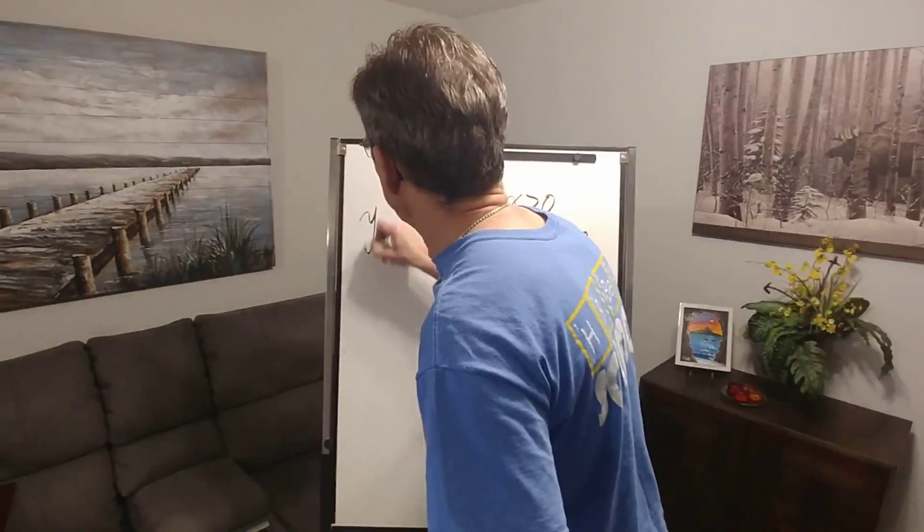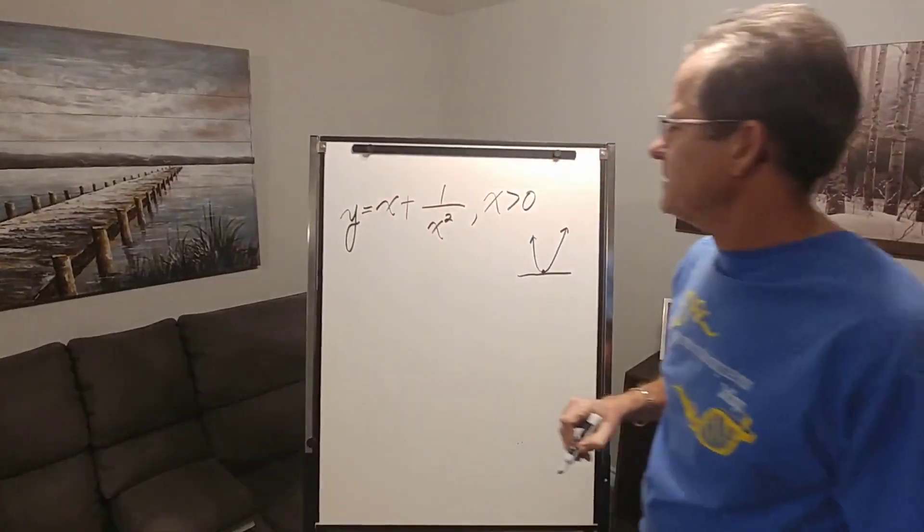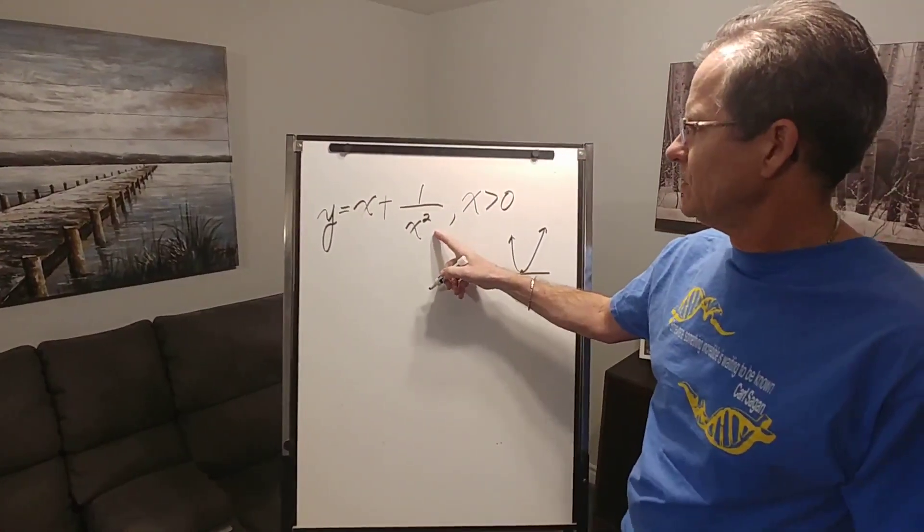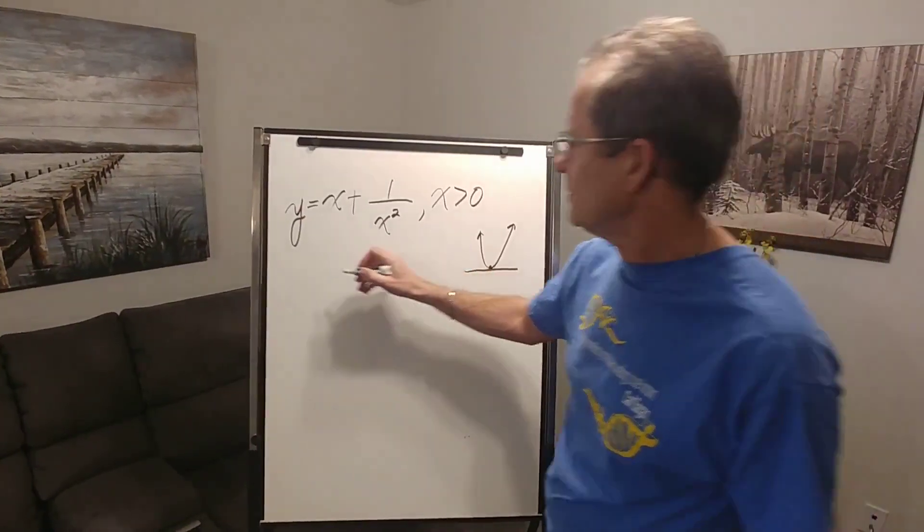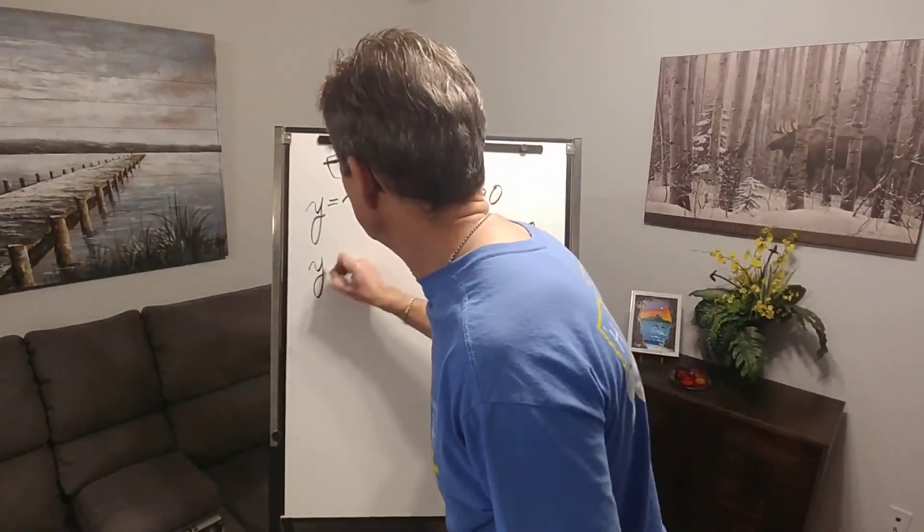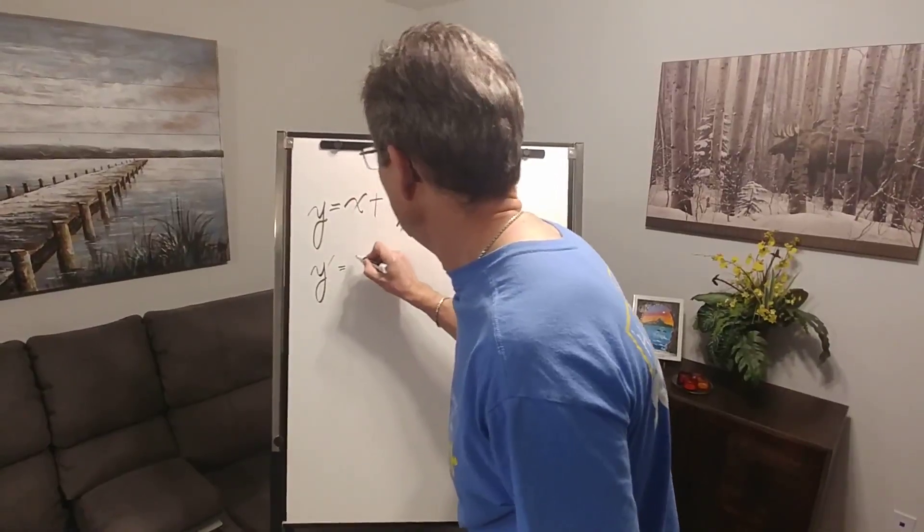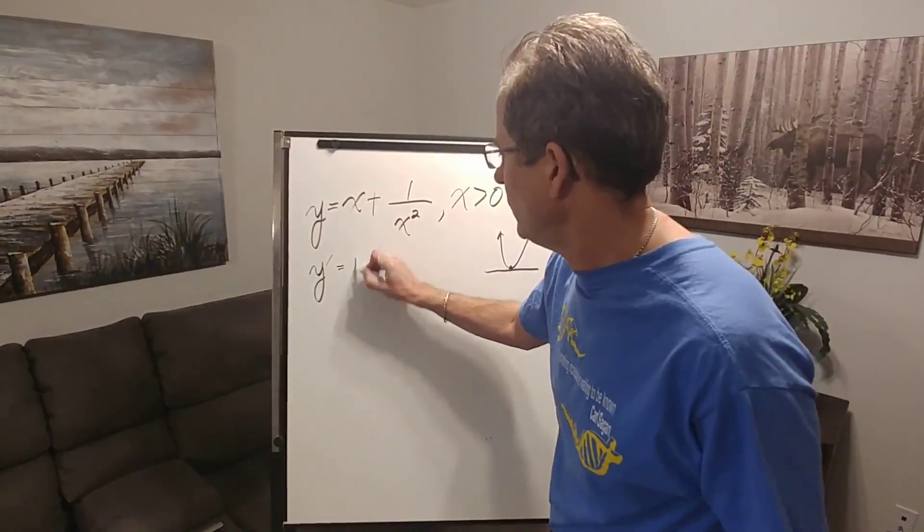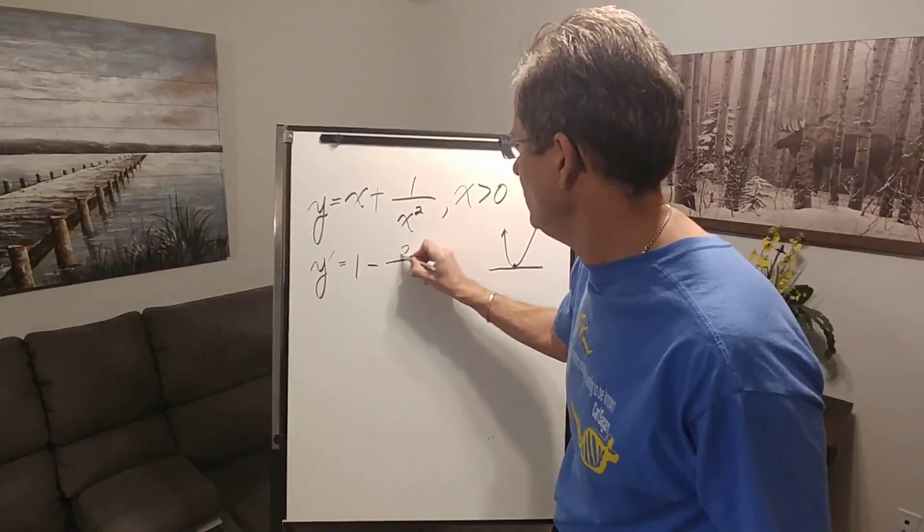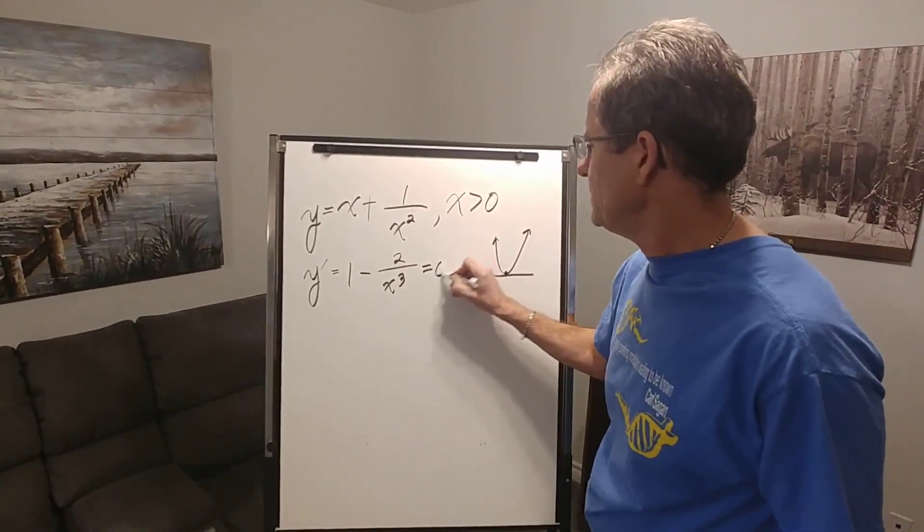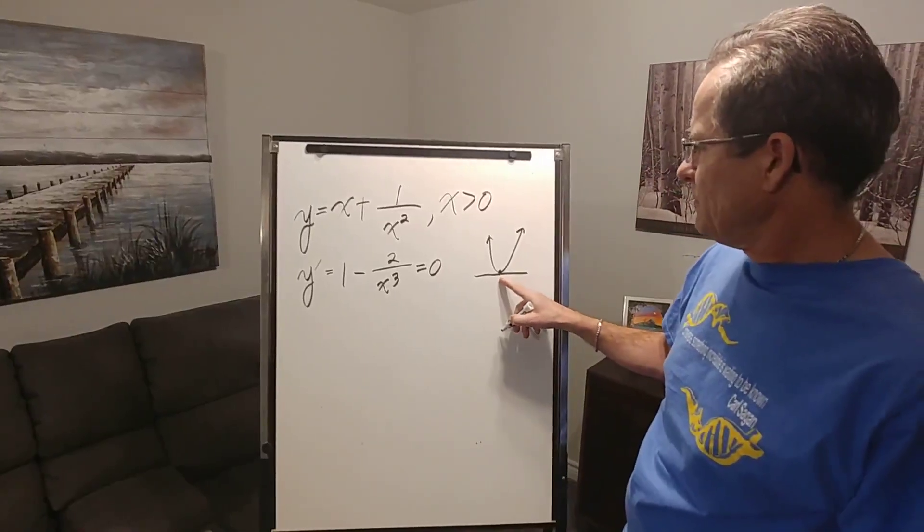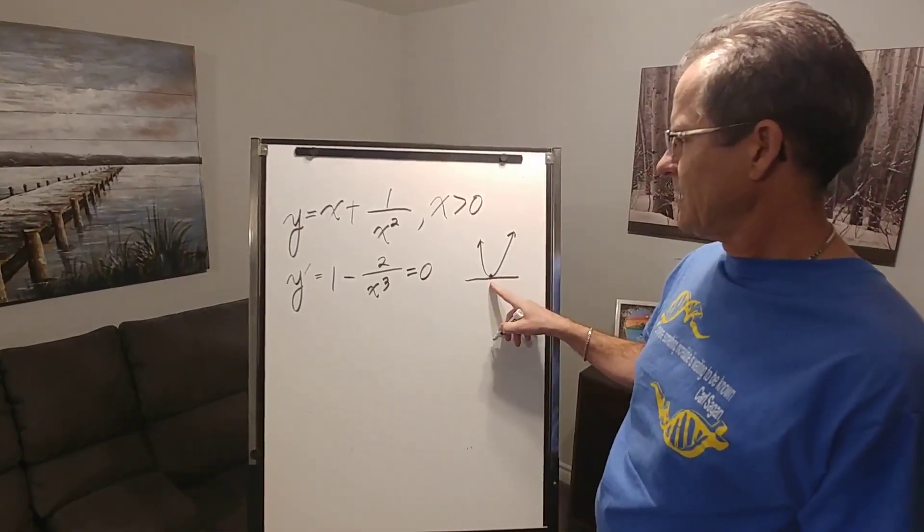Let's call this y and now I need to calculate the slope of this curve using calculus. If you don't know the details that's fine, just take my word for it. The slope, which we call the derivative and write y prime, of this function is 1 minus 2 over x cubed. We want that to be zero so we can find the minimum point, which is what the question is asking us to do.